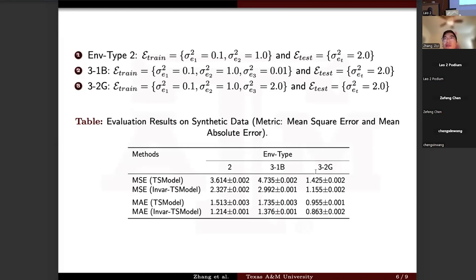For the second training environment, we add the data collected when sigma is 0.01. For the third setting, we add some data samples from the test environment. We use the mean square error and the mean absolute error as the evaluation metrics.